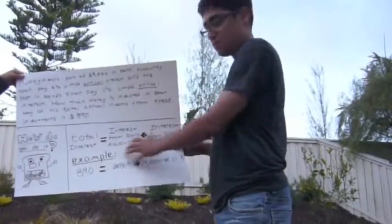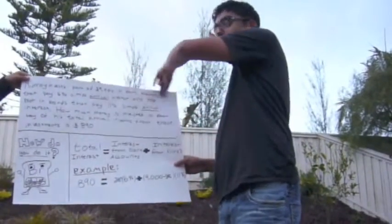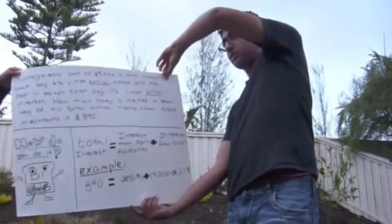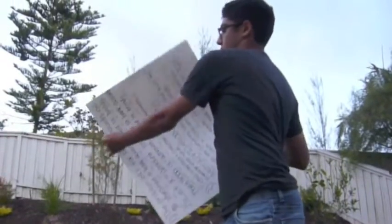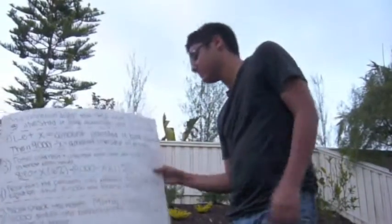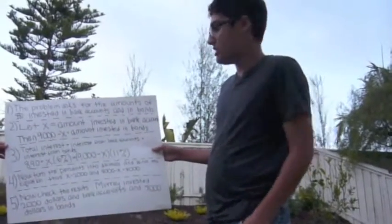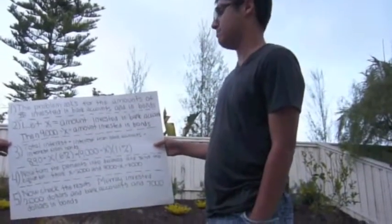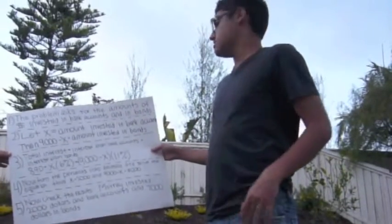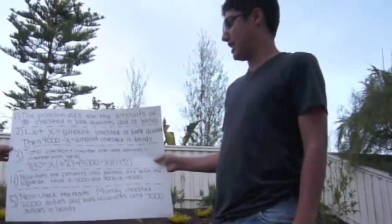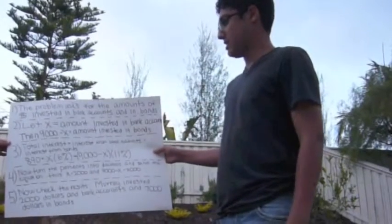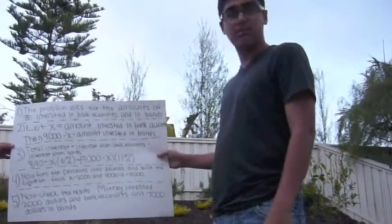As you can see, a bunch of words here. Let's flip it over for the actual word description. The problem asks for the amount of money invested in bank accounts and in bonds. Let X equal the amount invested in bank accounts. Then $9,000 minus X equals the amount invested in bonds.